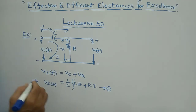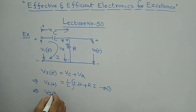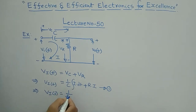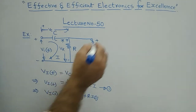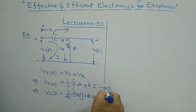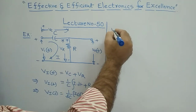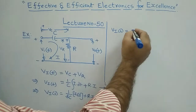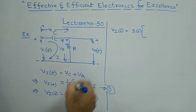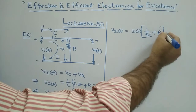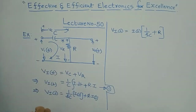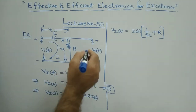Applying the Laplace transformation to the loop equation, V_i(s) becomes: (1/sC)·I(s) + R·I(s). Taking I(s) as common, this gives V_i(s) = I(s)·(1/sC + R). This is equation number two.